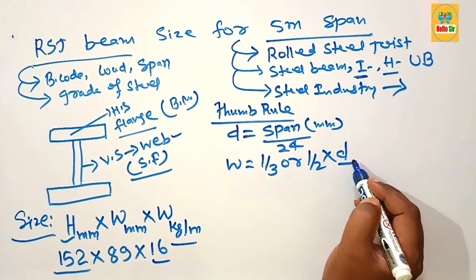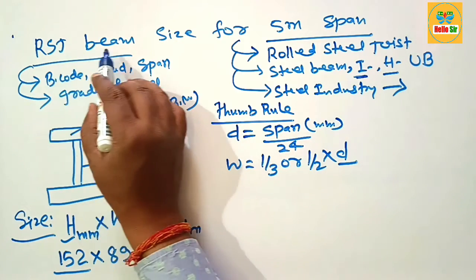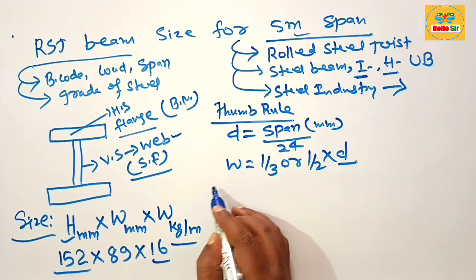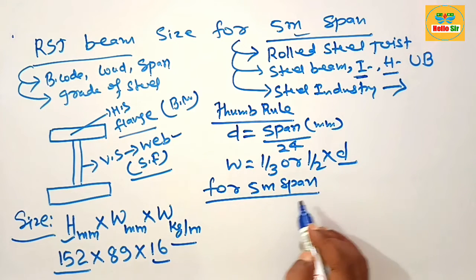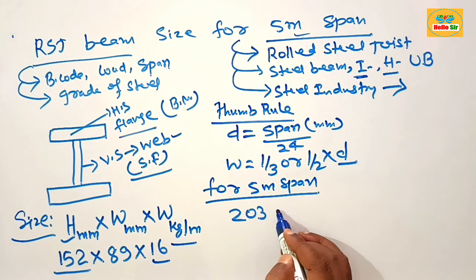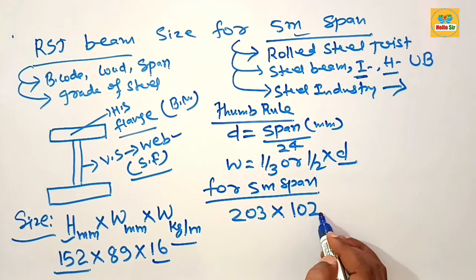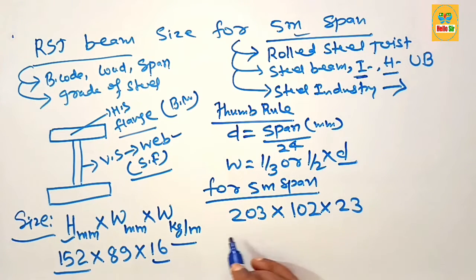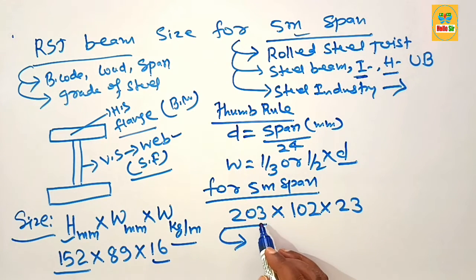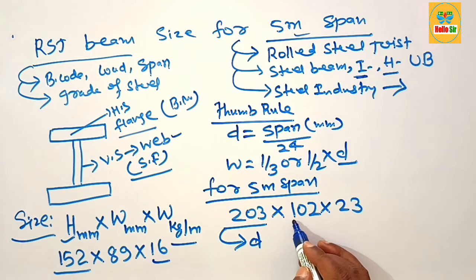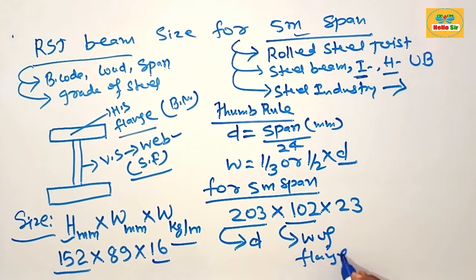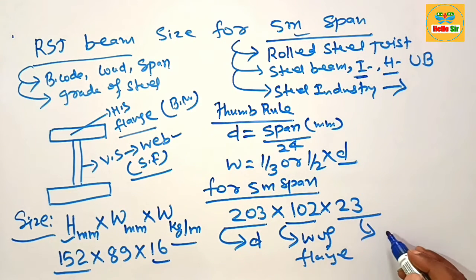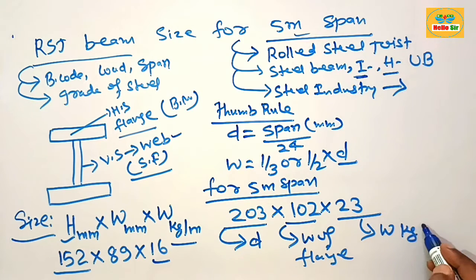Here you have question ask what size RSJ beam do I need for 5 meter span. For 5 meter span you need something like 203 x 102 x 23. This include: this is the depth of the RSJ beam which is 203, this one is the depth and this 102 is the width of flange, width of flange.